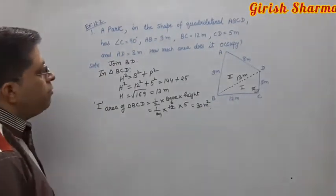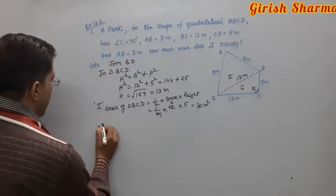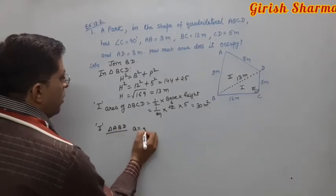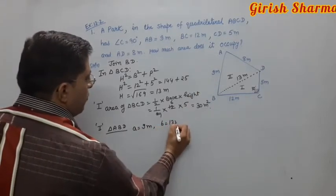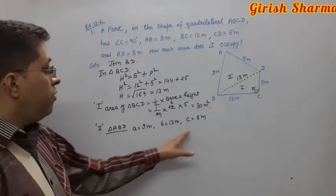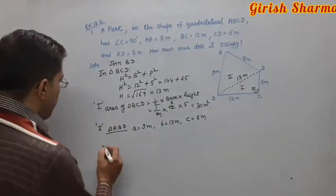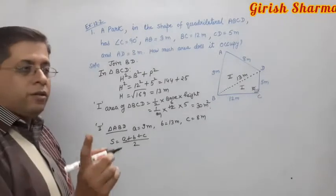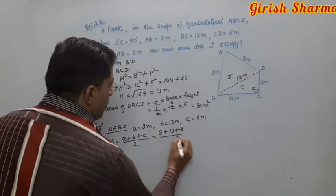For the second part, triangle ABD: side AB is 9 meters, BD is 13 meters, and AD is 8 meters. Since all three sides are known, use Heron's formula. Semi-perimeter s equals a plus b plus c upon 2 equals 9 plus 13 plus 8 upon 2 equals 30 upon 2 equals 15 meters.